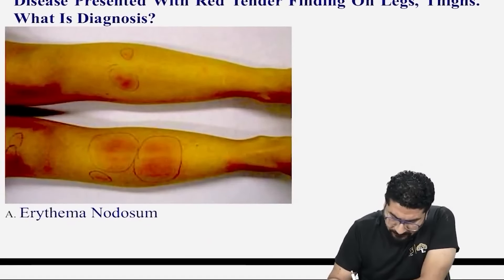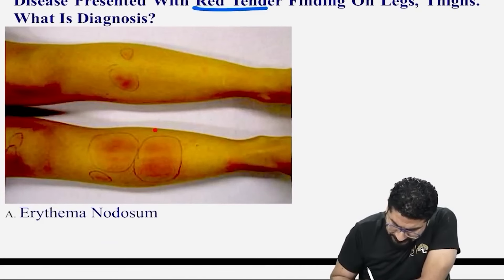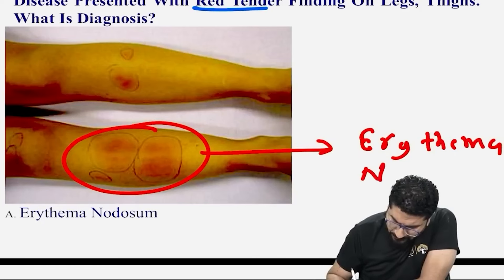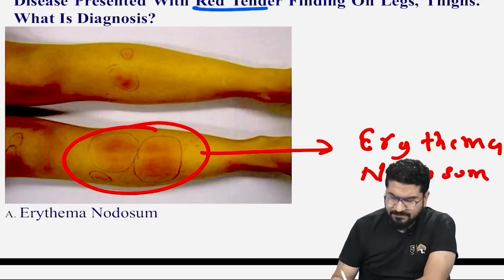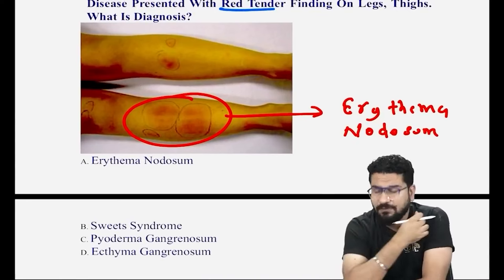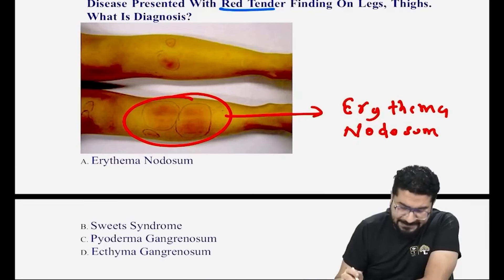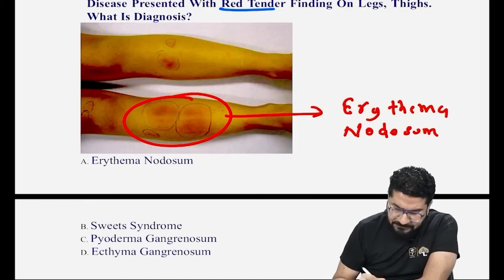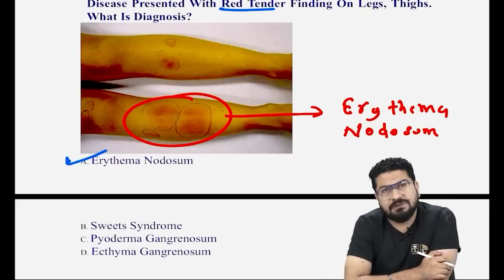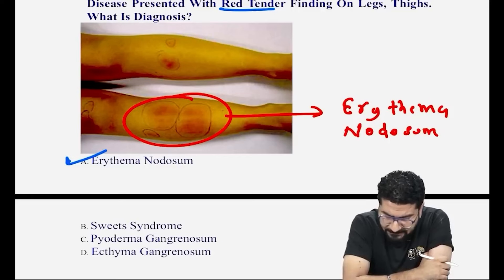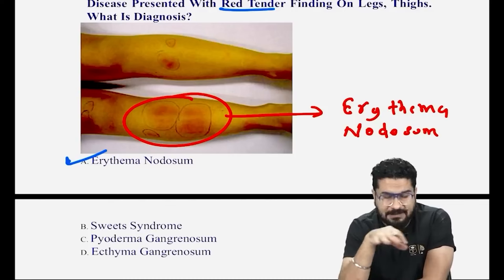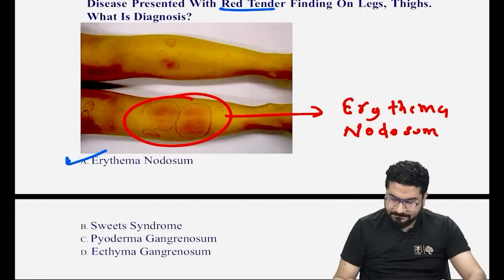Next: a known case of Crohn's disease with red tender findings on the skin — these are called erythema nodosum, a cutaneous manifestation seen in many conditions including sarcoidosis, Crohn's disease, and ulcerative colitis. This is an extra-intestinal manifestation of Crohn's disease. Pyoderma gangrenosum and ecthyma are also seen in Crohn's but do not present as round tender lesions on the tibial area.